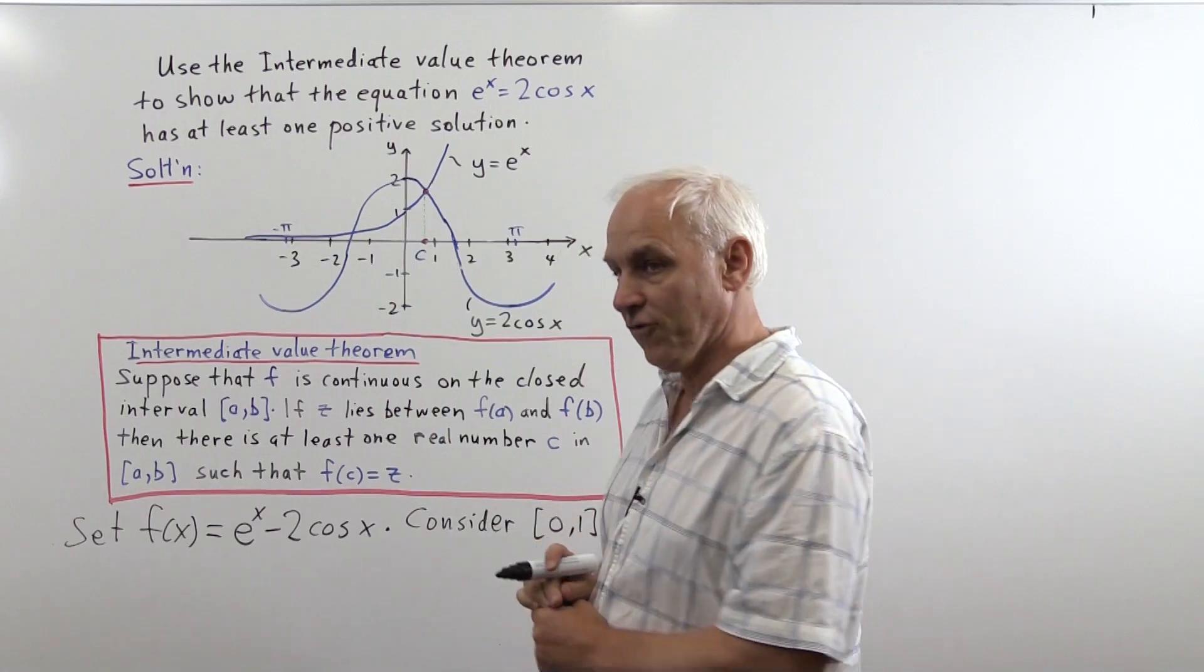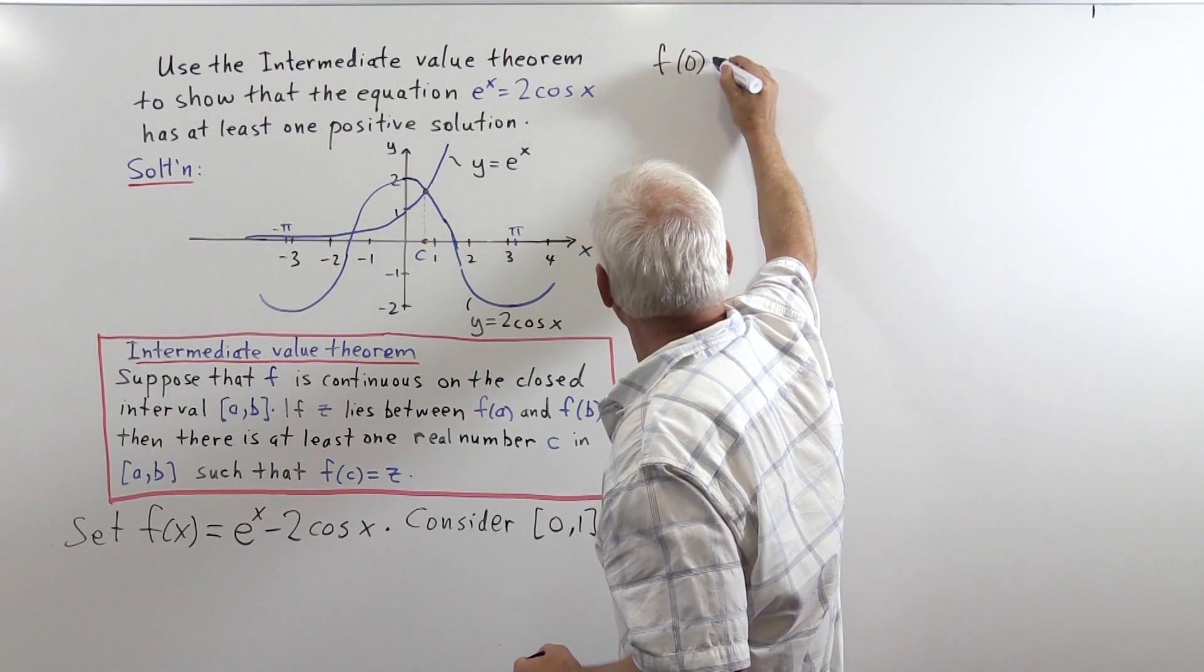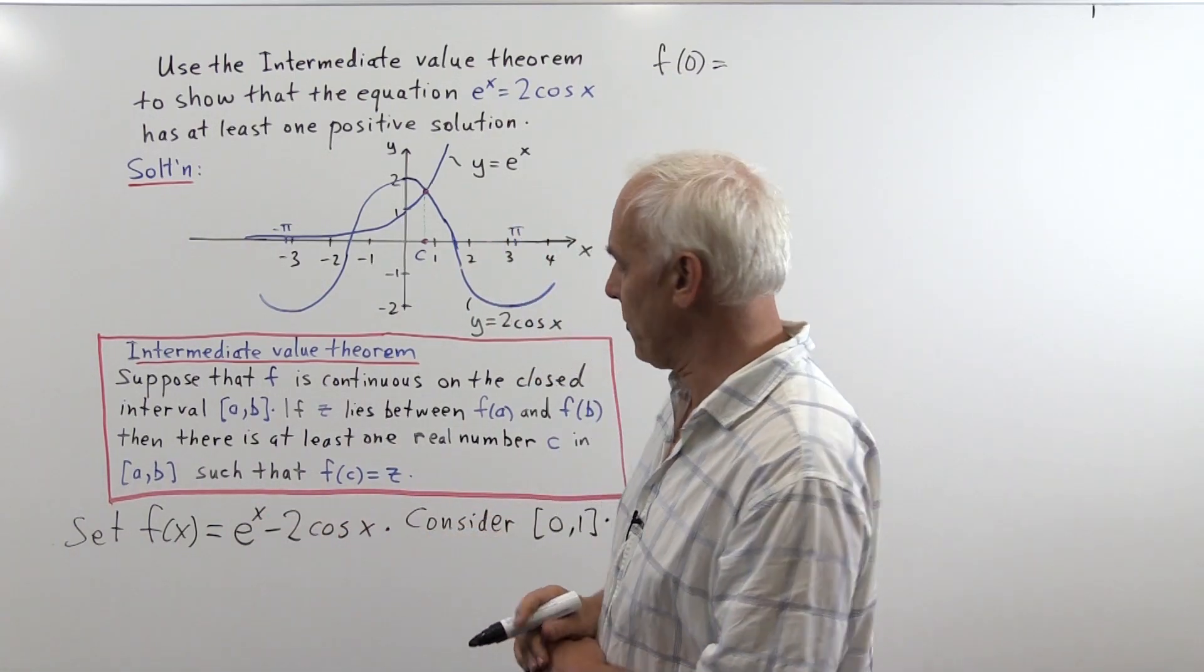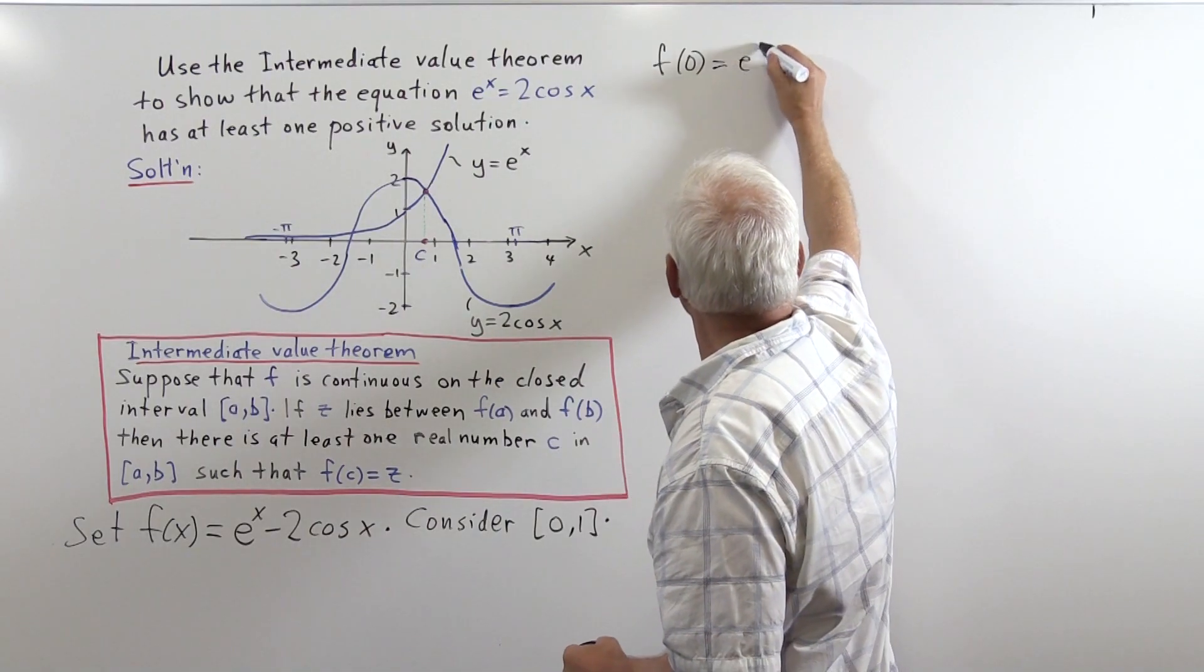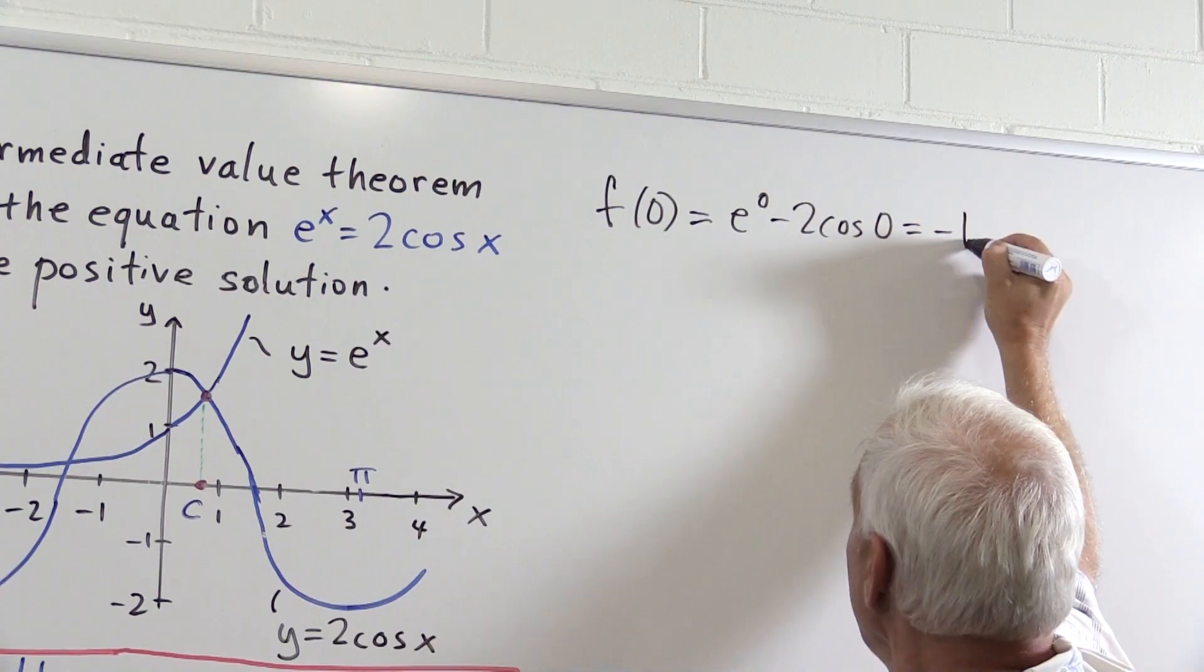We're going to choose this interval because if we calculate f(0), that's equal to e^0 - 2cos(0), so that equals -1.